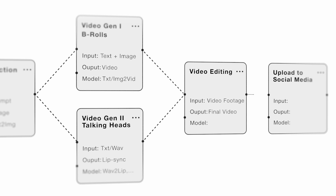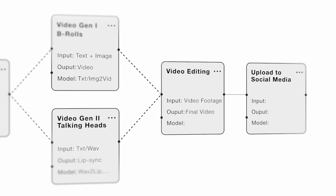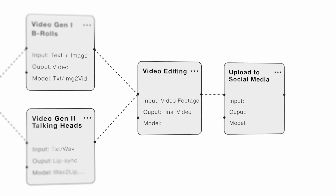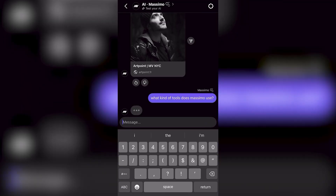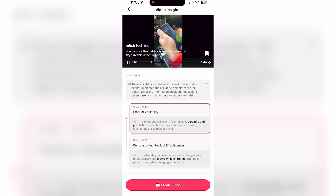Once the content is ready, we move on to publishing on social media. AI tools can optimize posts for engagement and tailor content for different platforms.